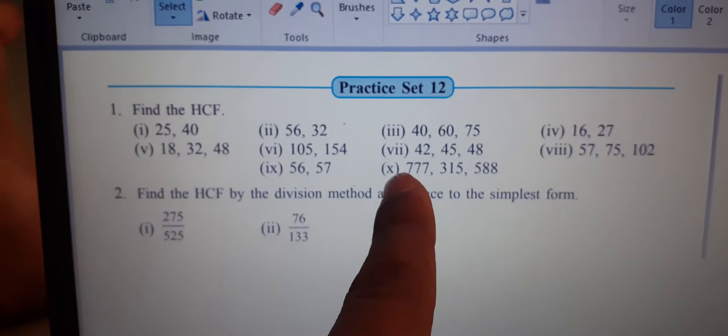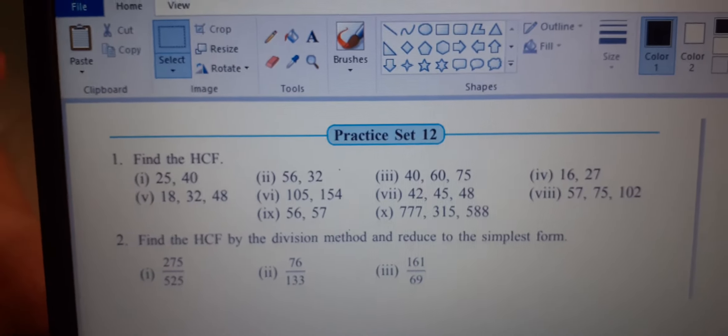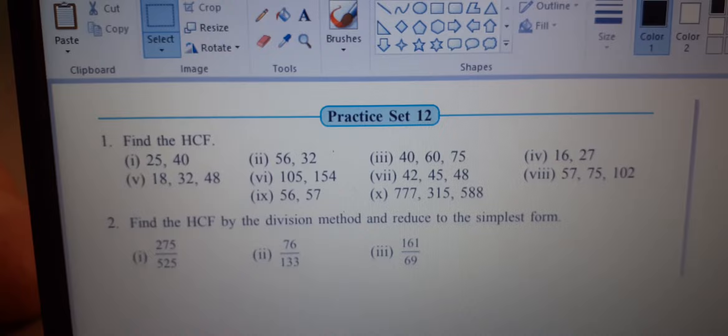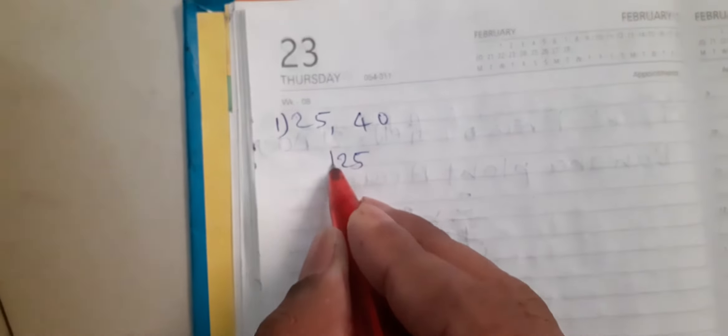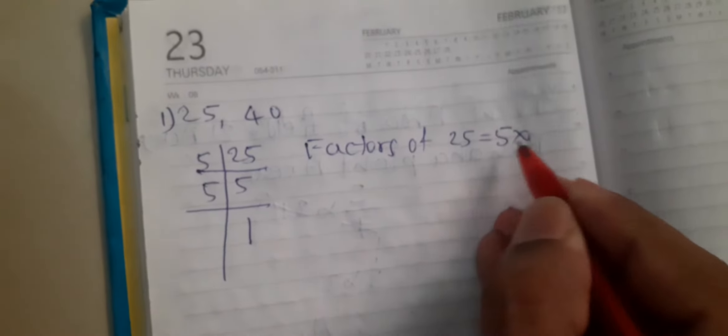If we look at HCF, we will take 1 to 10th question. First question is 25 and 40. Let us find the HCF. In HCF, we should add the factors. 5 times 5 is 25, so factors of 25 is equal to 5 into 5.